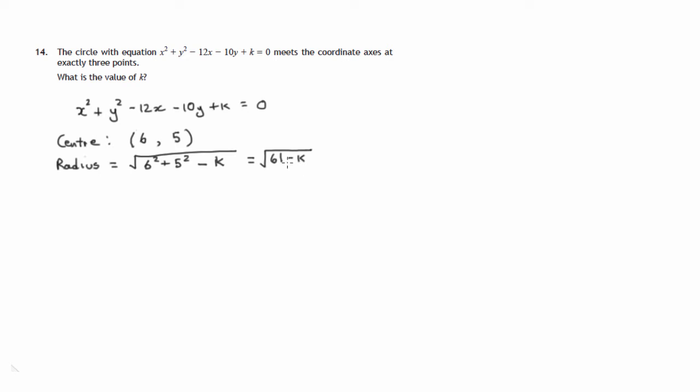Now it's interesting that if this number, 61 minus k, goes negative, you won't have a circle at all. So if k is greater than 61 or even equal to 61, you won't have a circle. If it was equal to 61, you would have a radius of 0. So k must be less than 61, otherwise no circle.